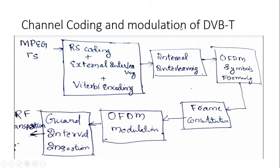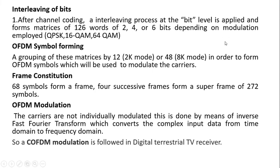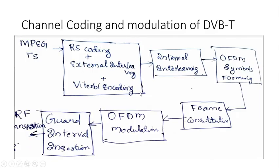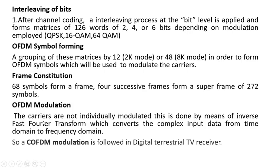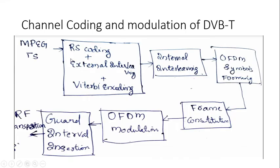This modulation used for DVB-T is called coded orthogonal frequency division multiplexing (COFDM), as it is followed in the digital terrestrial TV receiver. Once channel coding is performed, a complex interleaving process provides further error protection. After grouping symbols and forming frames, OFDM modulation is applied and the signal is converted to the frequency domain. This is why the front end of the DVB-T reception system is more complicated compared to DVB-C or DVB-S, because all these processes take place in OFDM modulation.